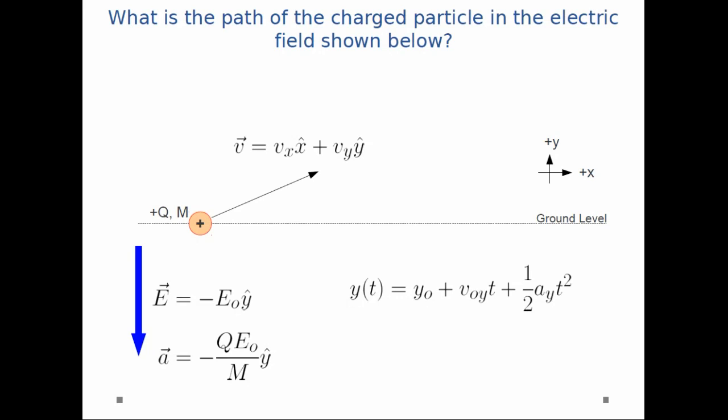I can do the same thing for the y-direction. But this time the acceleration in the y is not 0. It's what we found earlier so I substitute that in. And y-naught is 0. Again it starts at the origin.